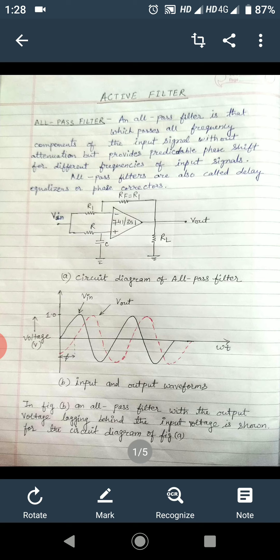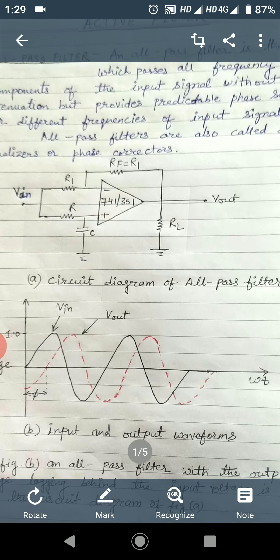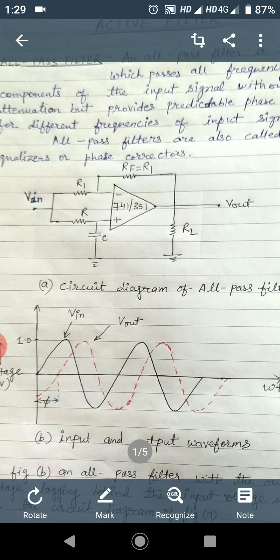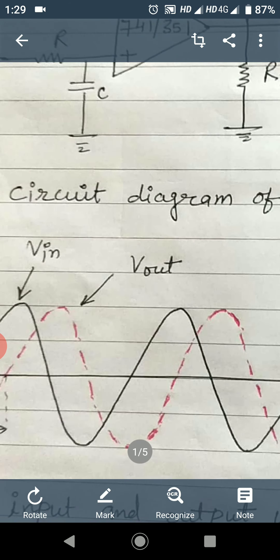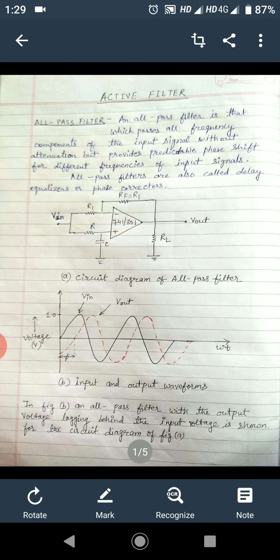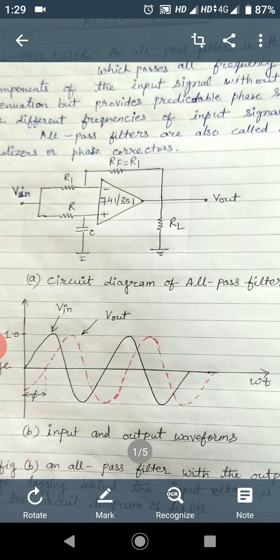The next type of filter is the all pass filter. The all pass filter is a filter which passes all the frequency components of the input signal without attenuation, but it provides phase shift for different frequencies of input signals. All pass filters are also called as delay equalizer or phase corrector.